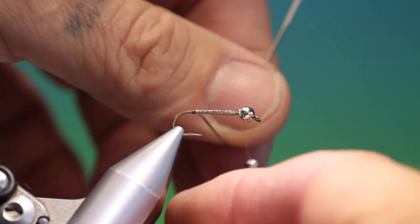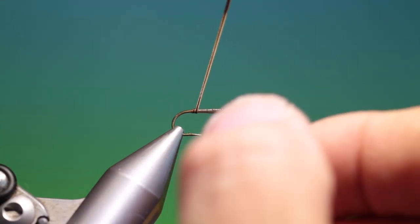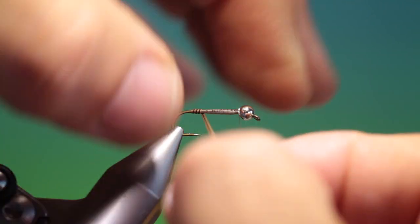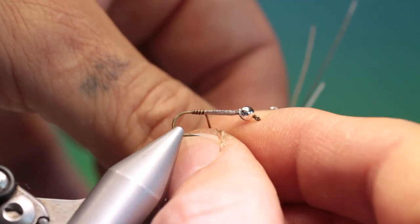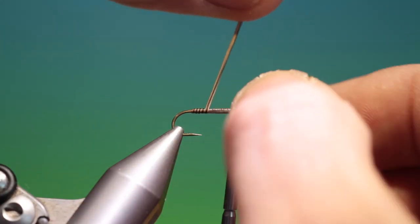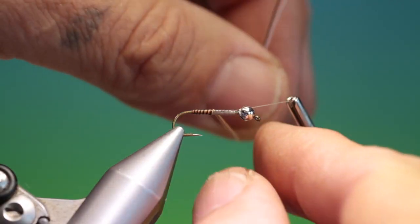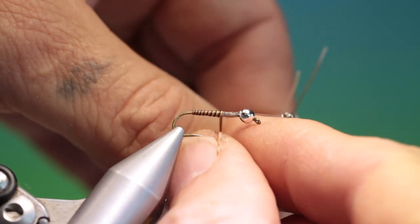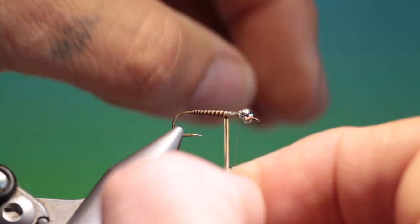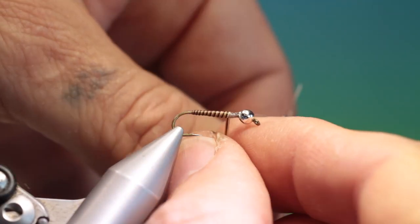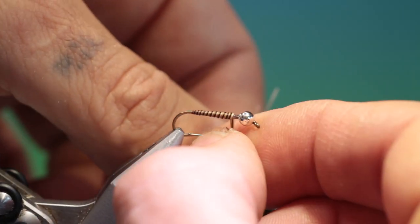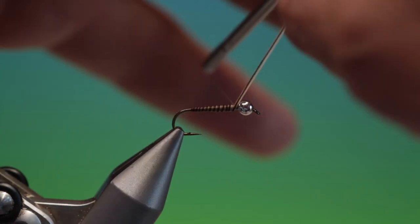And what we want to do is keep the hairs parallel as we wrap them and we have to wrap them hand over hand. Otherwise they'll twist. We don't want them to cross each other. Because that's the way you get the best body effect if you wrap them parallel. You can see how the body colour is changing now as it gets further up the abdomen into the thorax. That'll do is very nicely there. So we'll just tie those off.